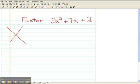The first thing I'm going to do is make a large x that splits my paper into four different regions. In the top of this x, I'm going to take the leading coefficient of 3 and multiply it by the constant term here, 2. 3 times 2 is 6. So I'm going to put a 6 up here.